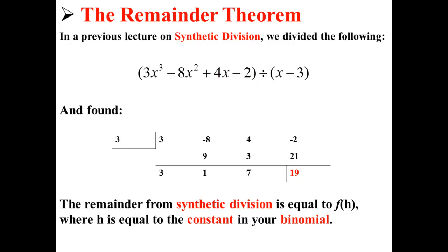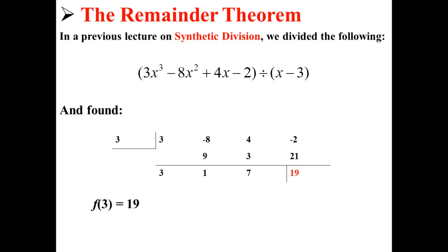According to the remainder theorem, the remainder from synthetic division is equal to f of h, where h is equal to the constant in your binomial. Here, the constant in our binomial is 3. So what the remainder theorem is saying is that f of 3 is equal to 19.